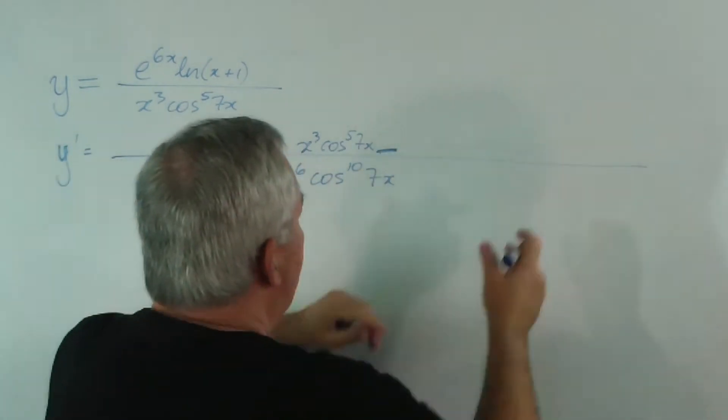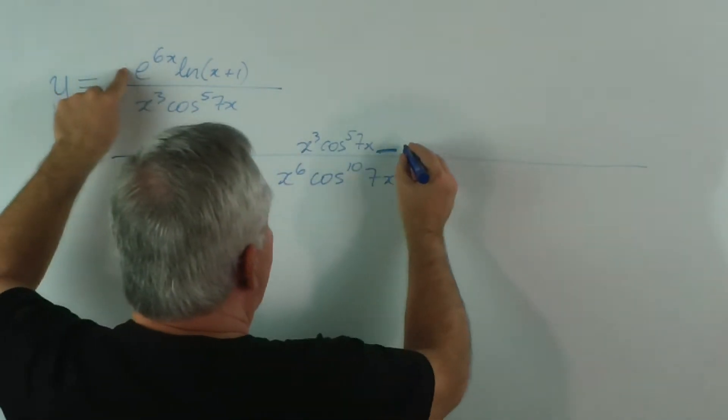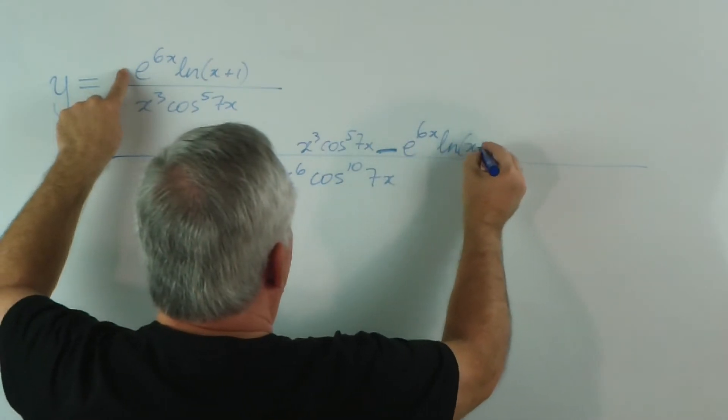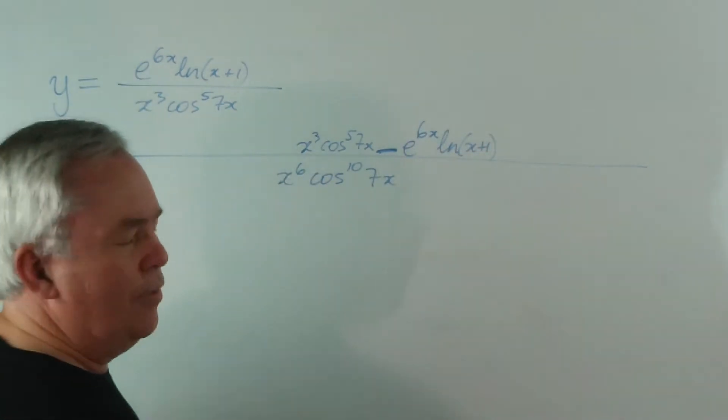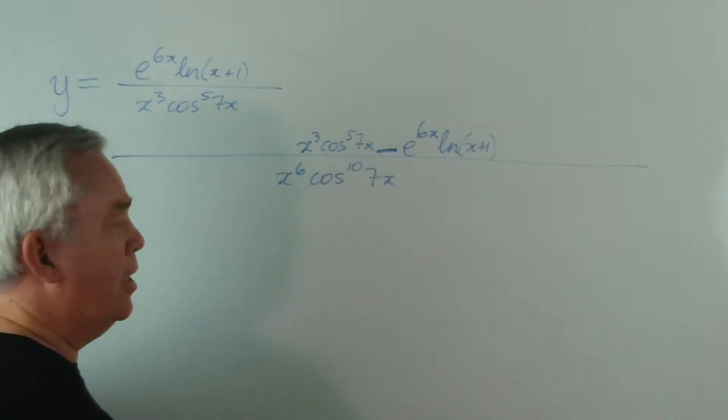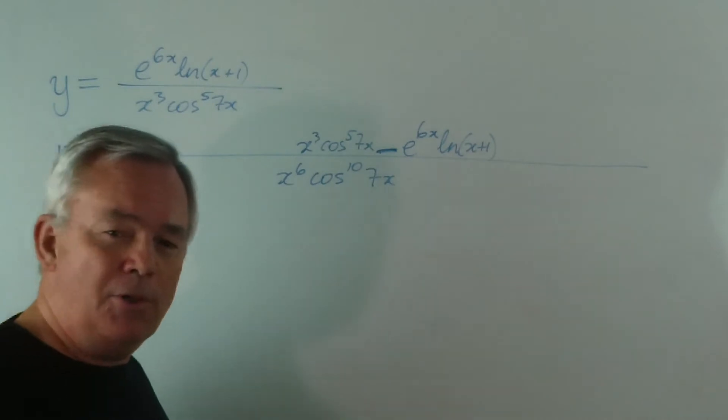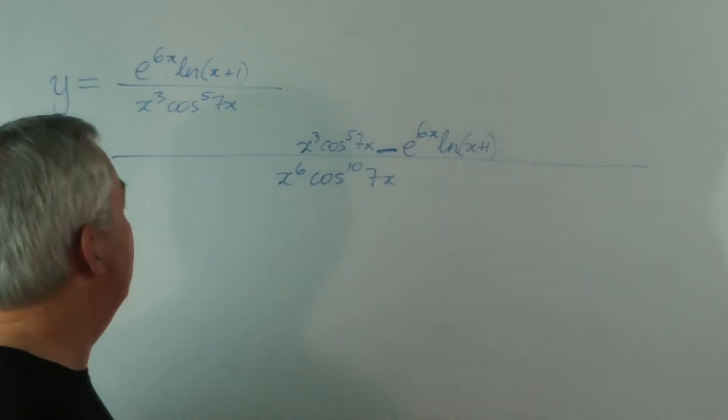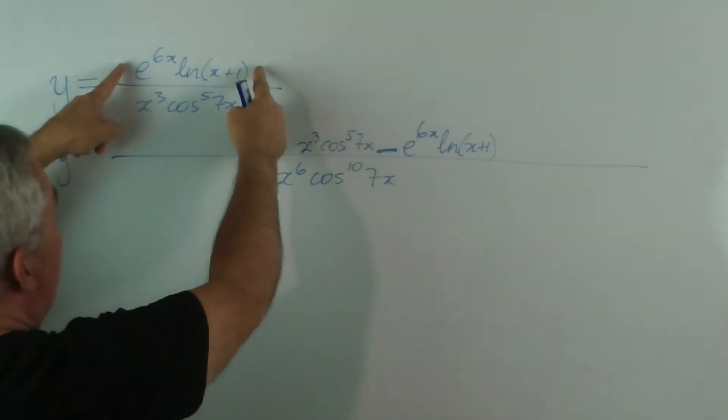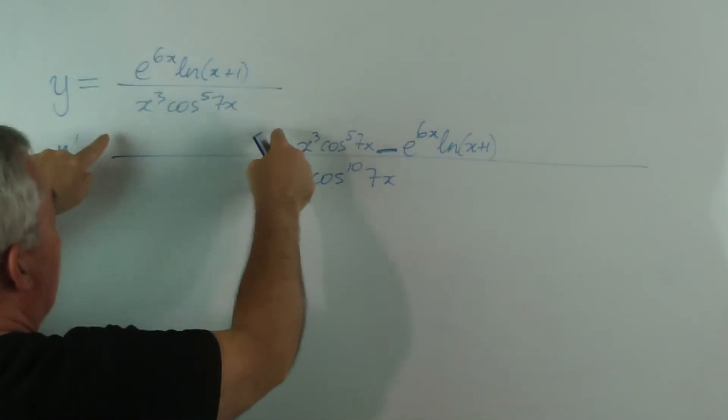And, in the second part of the expression, we're going to leave the top alone and multiply by the derivative of the bottom. So, what I've done is I've already drawn out the structure that takes care of the quotient part of the derivative. Now, when we find the derivative of the numerator, to put it here...